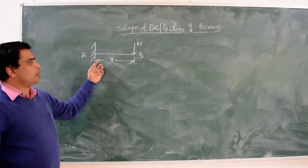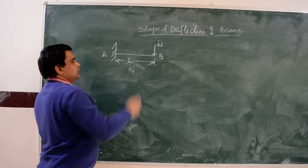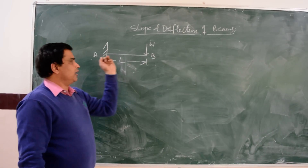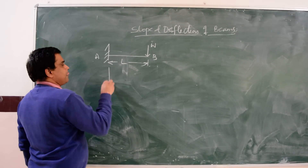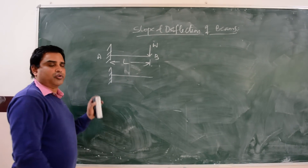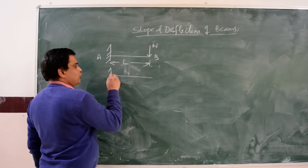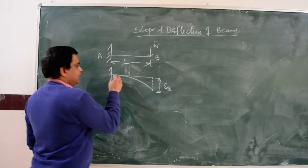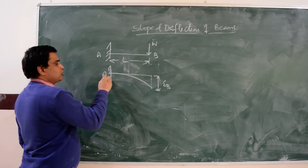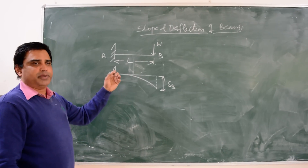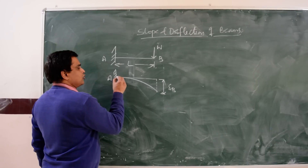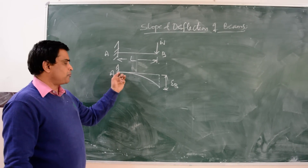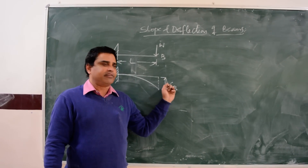It is a cantilever beam carrying a point load at the free end, spanning L meters. We need to calculate the slope and deflection at the free end. Before starting, we draw the deflection shape of the cantilever beam. The beam bends in a circular arc. Maximum deflection occurs at the free end, and there is no deflection at the fixed support due to its rigidity. The tangent on the elastic curve at the fixed end is parallel to the beam axis, so there is no slope and no deflection at the fixed support. Slope and deflection are both maximum at the free end.